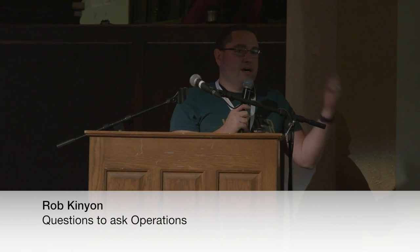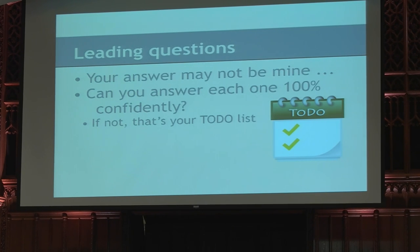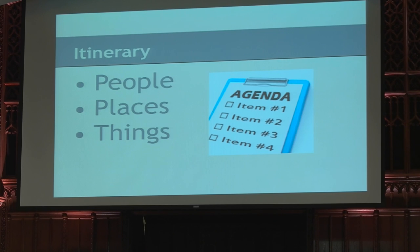I've got a bunch of questions to ask our operations team — questions that every operations team needs to be able to answer. These are not questions that have one universal answer; these are questions you need to be able to answer for yourself. If you don't have a good answer, that's probably one of the things you should be working on. When we don't have the ability to manage our people, our places, and our things, we end up dealing with emergencies, ad hoc processes, and most importantly, things that only one person knows how to do — which is a problem because that person leaves.